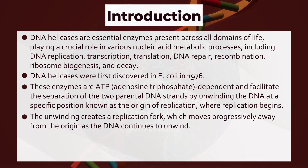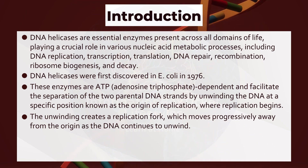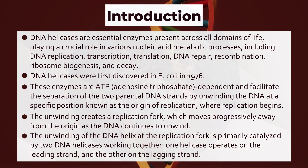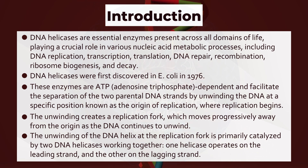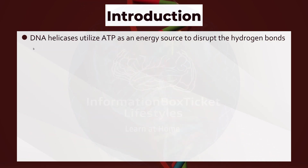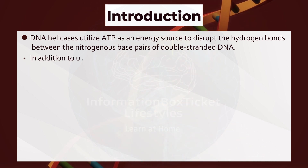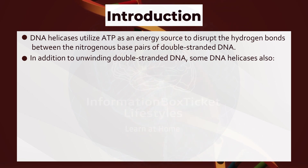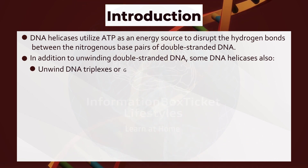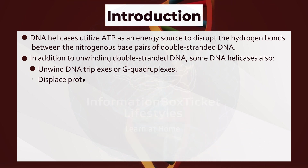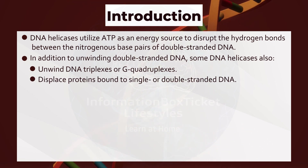The unwinding creates a replication fork, which moves progressively away from the origin as the DNA continues to unwind. The unwinding at the replication fork is primarily catalyzed by two DNA helicases working together — one helicase operates on the leading strand and the other on the lagging strand. DNA helicases utilize ATP as an energy source to disrupt the hydrogen bonds between the nitrogenous base pairs of double-stranded DNA.